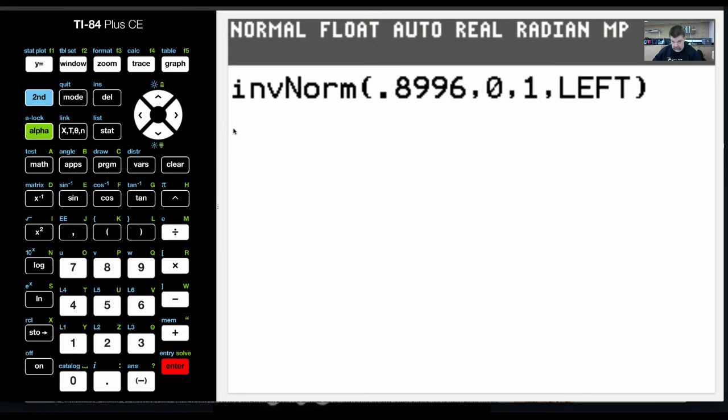And basically what I'm telling the calculator is I want to know the probability of 90% or 0.8996. Mu is going to be set at 0, although I will show you a video where we can standardize various values with the mean and standard deviation. And then I want to left tail. So when I hit enter, this should spit up something very close to 1.28. And so what this is telling me is this is going to give me the corresponding score of 1.28.